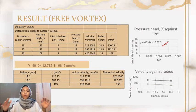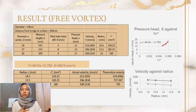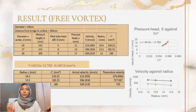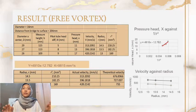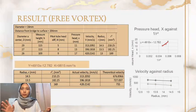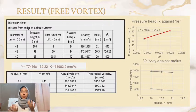After the value of k is calculated, we can calculate the theoretical velocity value. After the velocity is calculated, we can plot a graph of velocity against radius to conclude the relationship between velocity and radius.